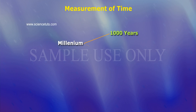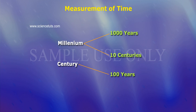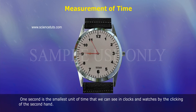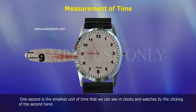A millennium consists of ten centuries, and each century consists of one hundred years. In the range, we finally come to the second. One second is the smallest unit of time that we can see in clocks and watches by the clicking of the seconds hand.